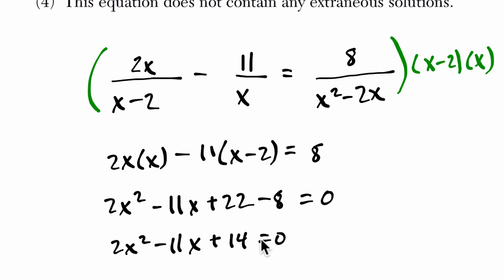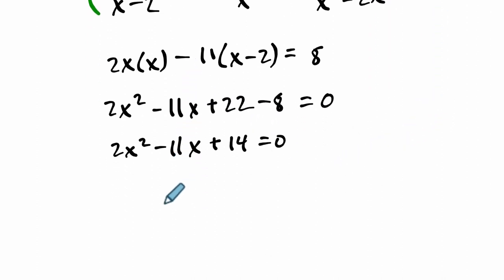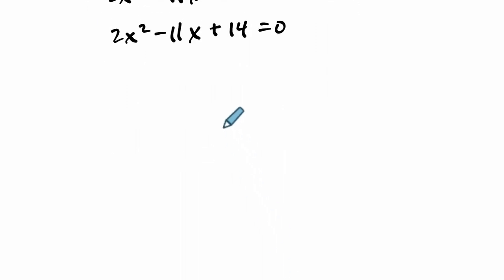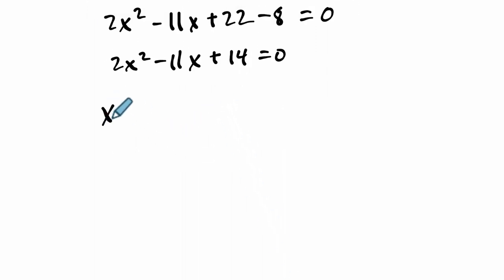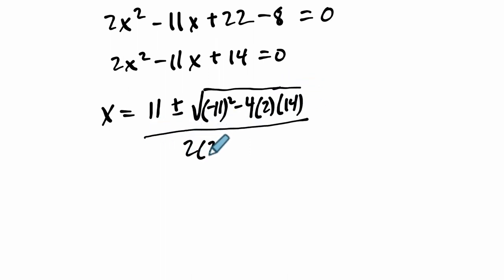Okay, so at that point, I just want to use the quadratic formula and see what's going to happen. So x equals the opposite of b, so opposite of negative 11, which is 11, plus or minus the square root of b squared, negative 11 squared, minus 4 times a, 2, times c, 14, all over 2 times a, 2 times 2.